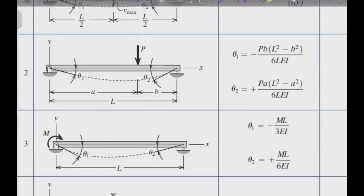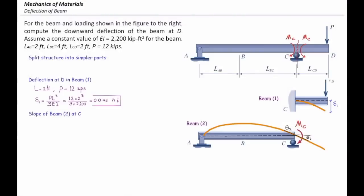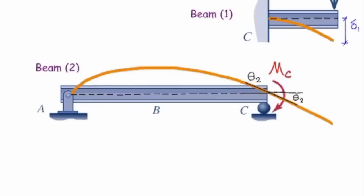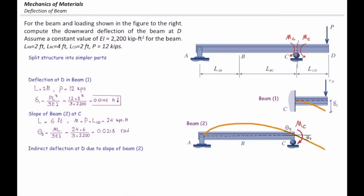Regardless of whether we call it theta one or theta two, we identify where the moment or force is acting on the structure. For beam number two — the simply supported beam — the length is 6 feet and the moment M_C = P × L_CD = 12 × 2 = 24 kip·ft. Plugging into theta = ML / 3EI gives theta two = 0.0218 radians. This is the slope of the simply supported beam due to the internal moment at point C.